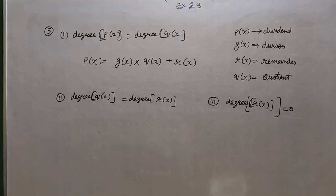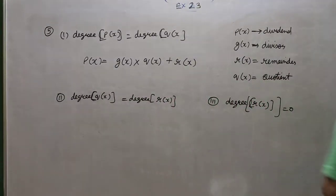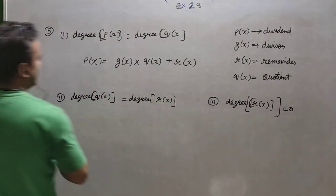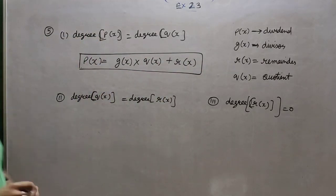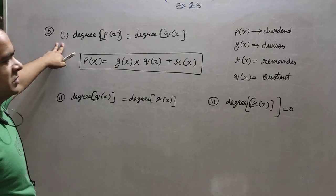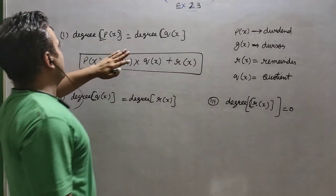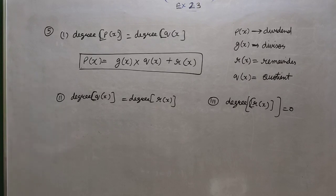I have denoted: p(x) as dividend, g(x) as divisor, r(x) as remainder, and q(x) as quotient. Euclid's: dividend equals quotient into divisor plus remainder. This is the first condition — you have to select. There are infinite choices. Degree of p(x) equal to degree of q(x) is the basis on which we find all the polynomials; any example can be given.